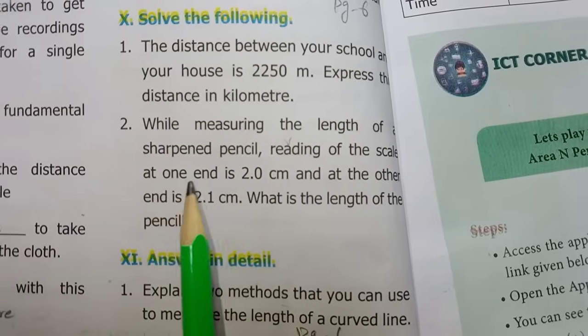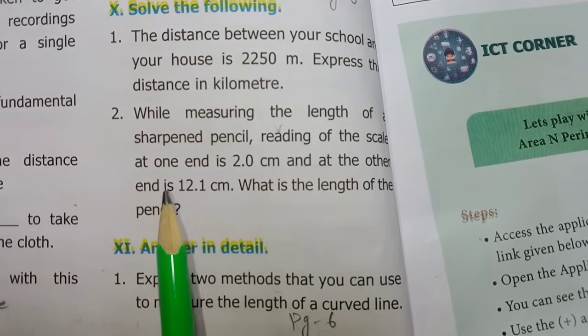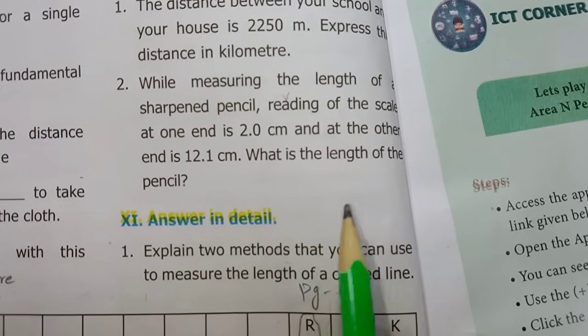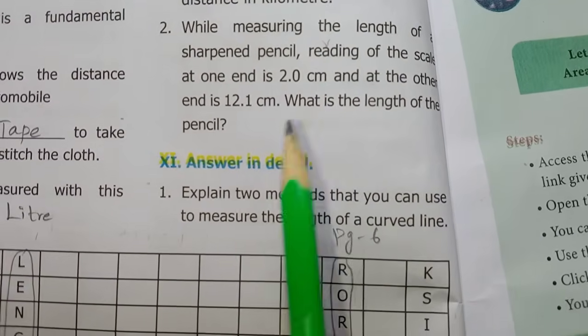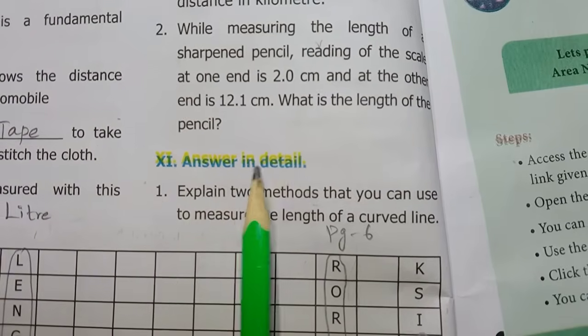Second one — while measuring the length of a sharpened pencil, reading of the scale at one end is 2.0 centimeter and at the other end is 12.1 centimeter; what is the length of the pencil? The difference between the two readings is the length: 12.1 centimeter minus 2.0 centimeter equals 10.1 centimeter.